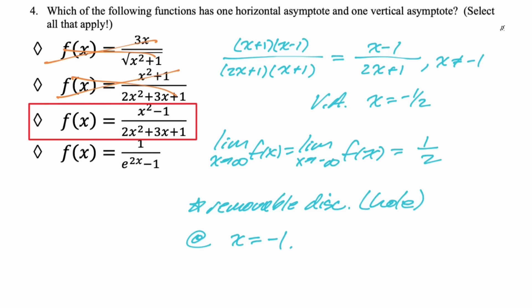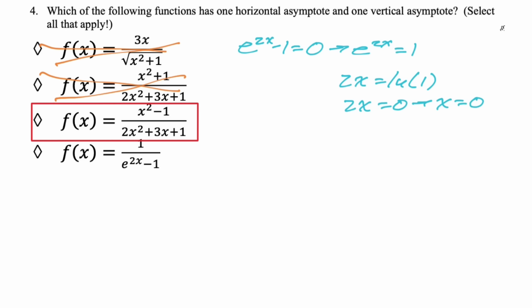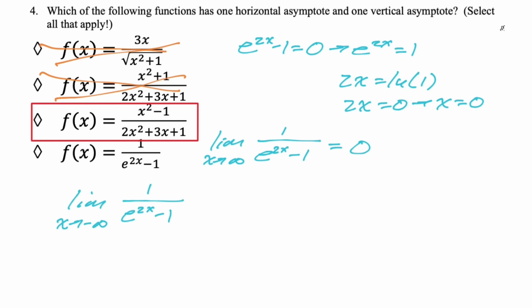The problem says 'check all that apply,' so we still check the fourth function. Setting the denominator equal to 0: e^(2x) - 1 = 0, so e^(2x) = 1, meaning 2x = ln(1) = 0, so x = 0. There is a vertical asymptote. As x → +∞, the limit is 0. As x → -∞, e^(2x) → 0, so the expression approaches 1/(0 - 1) = -1. Two different horizontal asymptotes, so this would not be an answer.